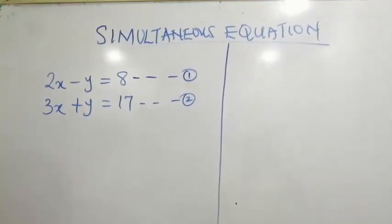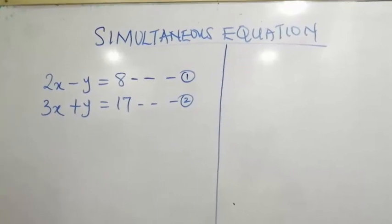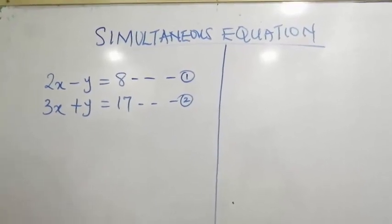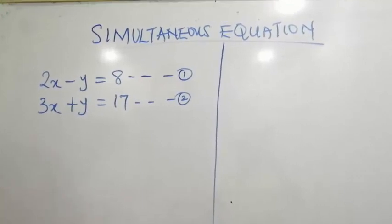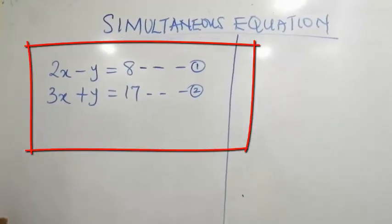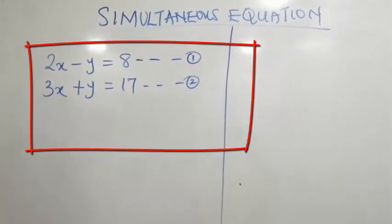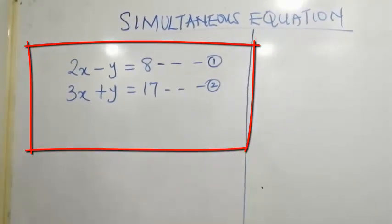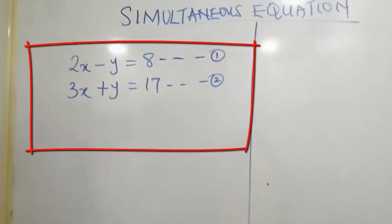So simultaneous equation is any equation that has more than two variables. For this example, it has variables x and y. And to find this variable, there are different methods to use.